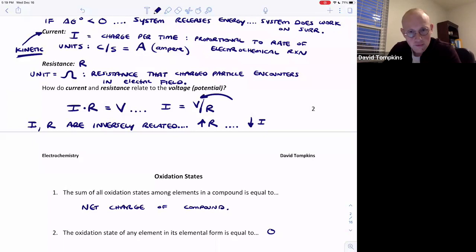But if we increase the voltage at a constant resistance, then a greater force will be present on the charged particle and the amount of charge movement per time will increase, so the current will go up.